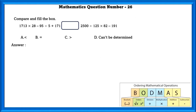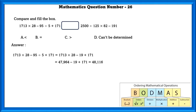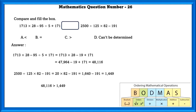Mathematics question number 26. Compare and fill the box. On the left side we simplify using the BODMAS rule, and on the right side as well. Simplifying the left side gives 48,116. Simplifying the right side gives 1,449. As we can see, 48,116 is larger than 1,449, so the answer is option C.